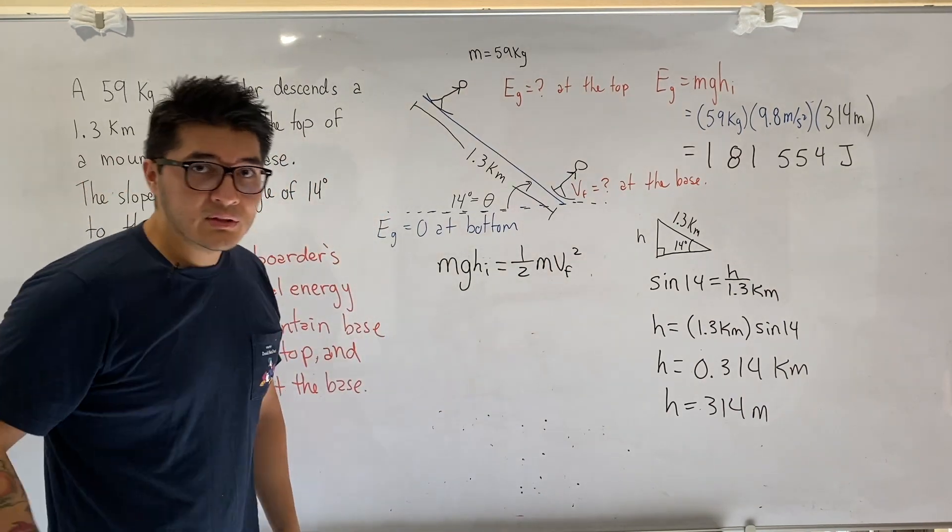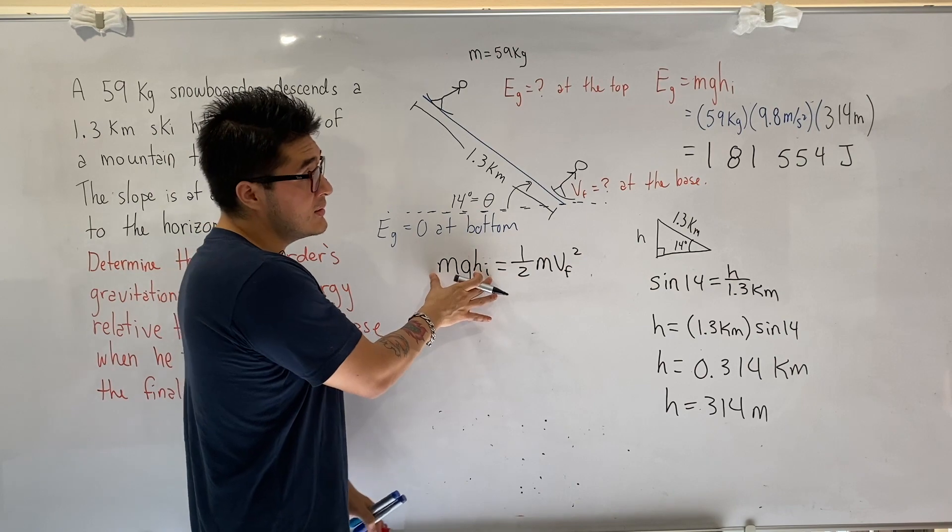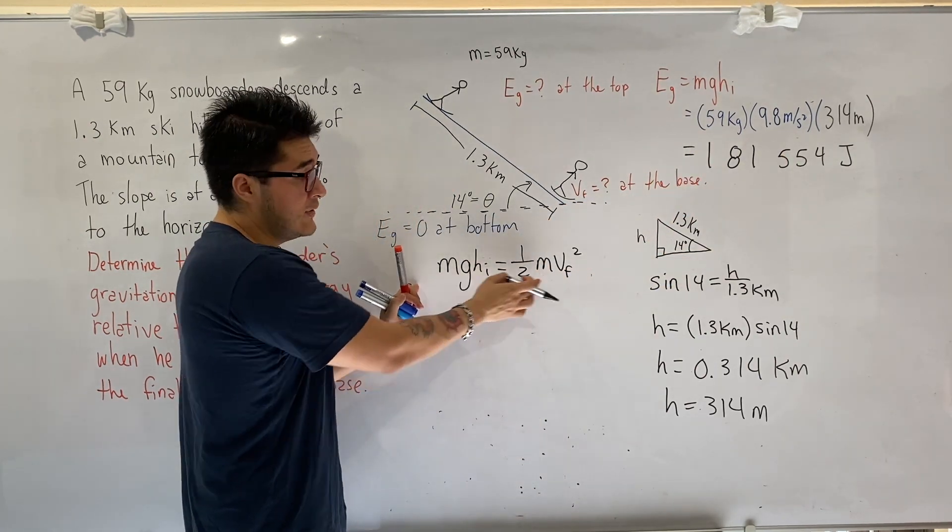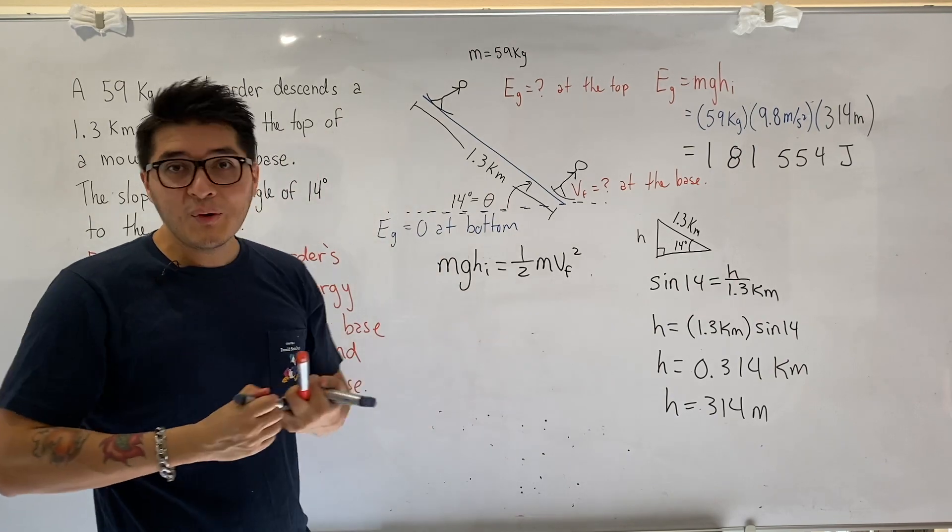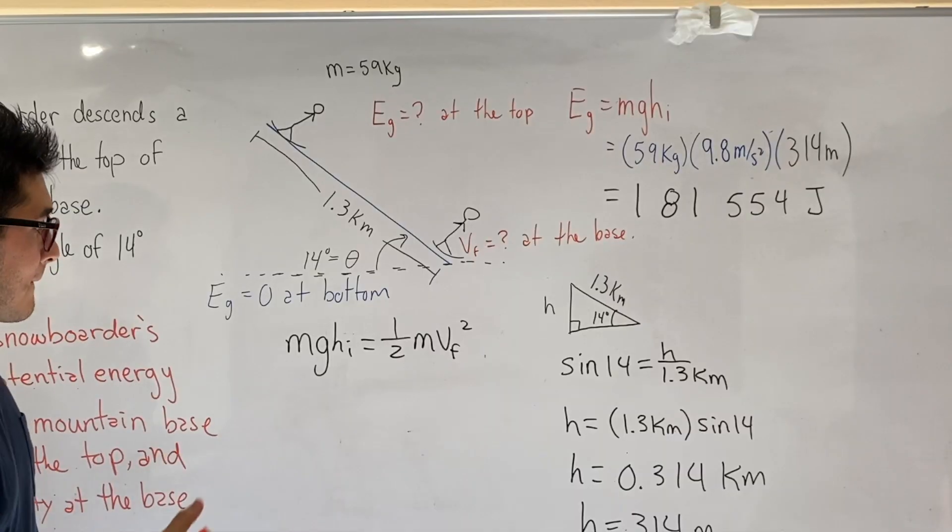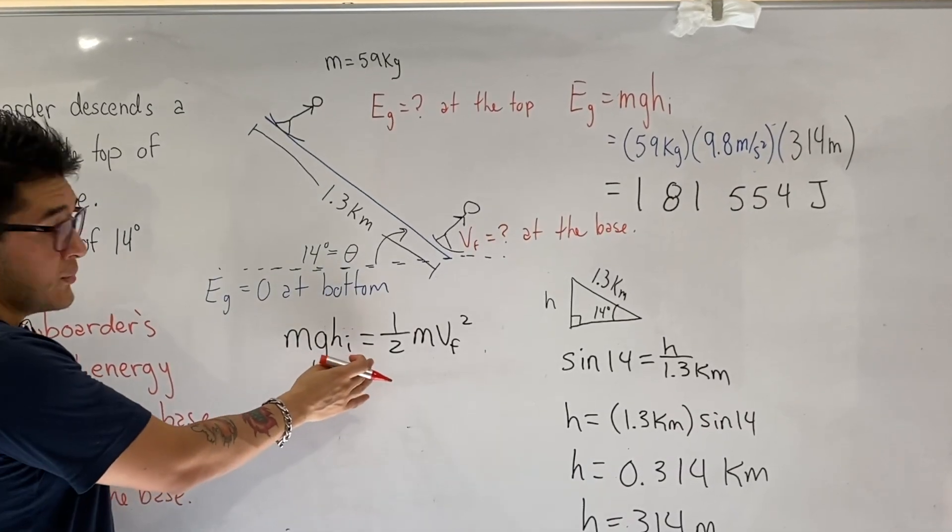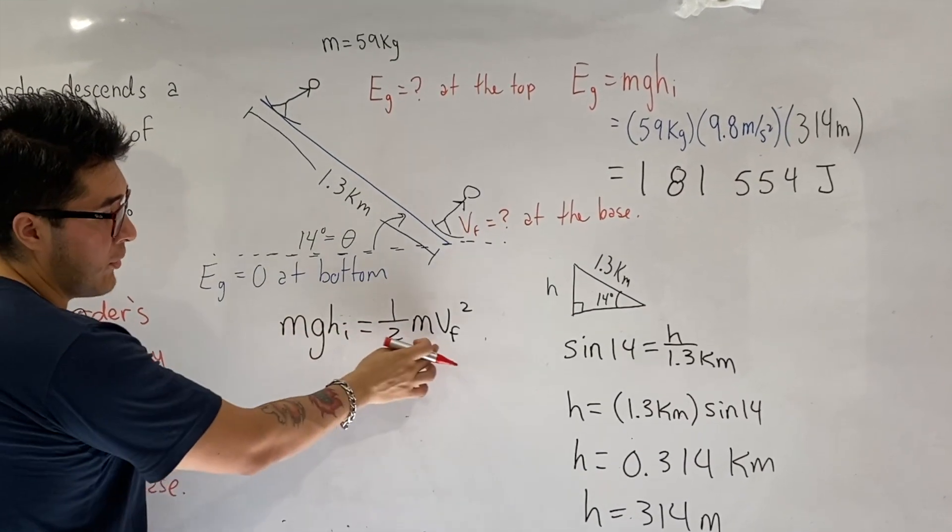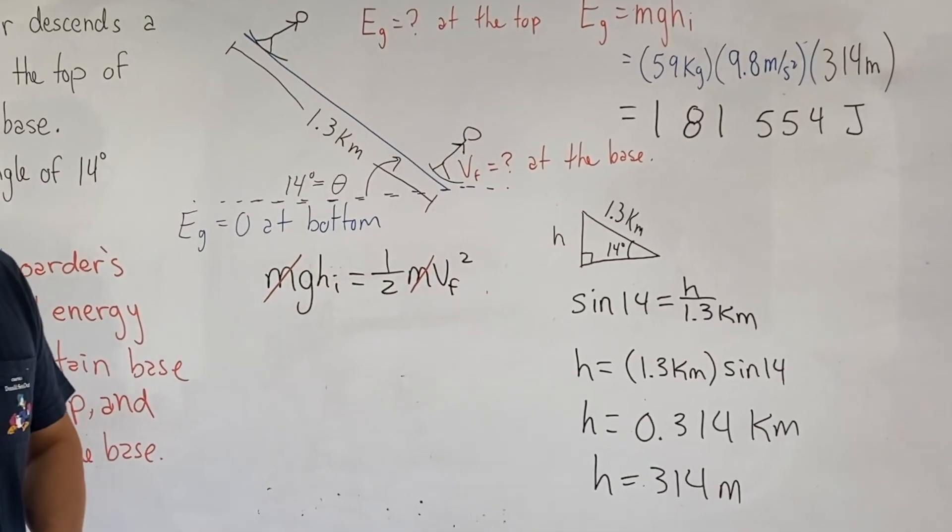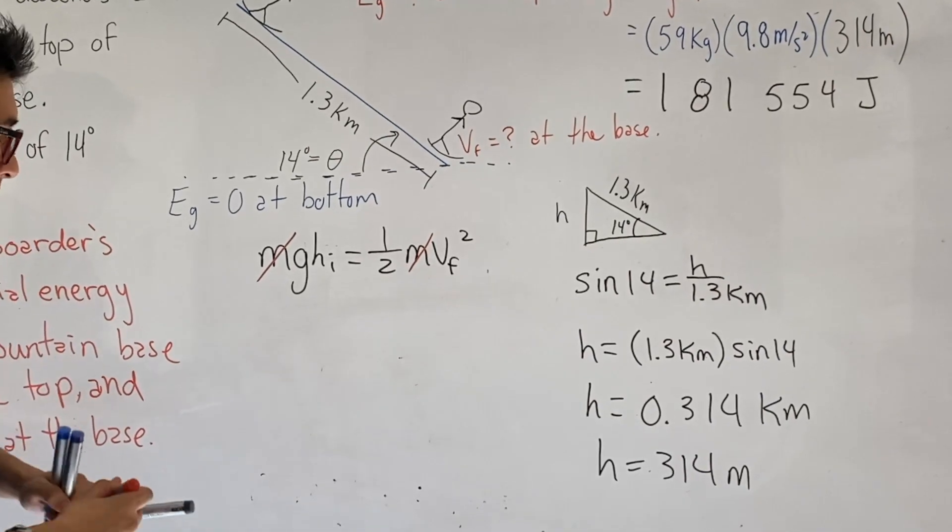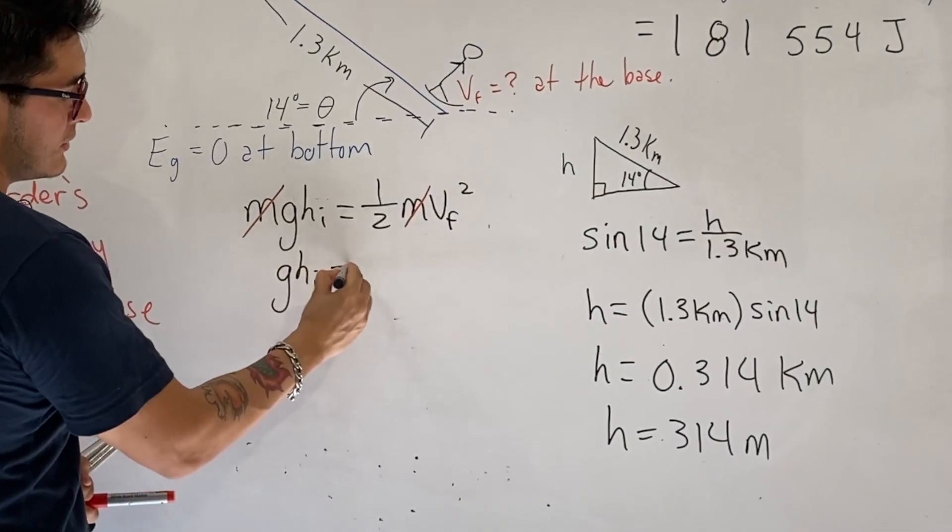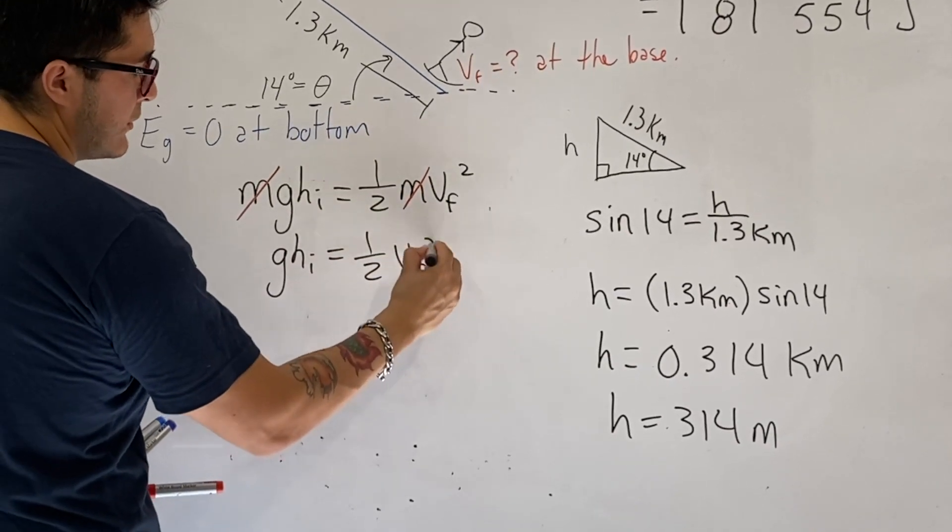So what was my formula? All the potential energy at the top, mgh initial, was equal to all my kinetic energy at the bottom, one-half mv final squared. You have two choices here. Since you already know what the potential energy is, you can put in this number into here and isolate for V final. But we want to play with algebra a little bit, it's kind of fun. So in this case, let's do algebra.